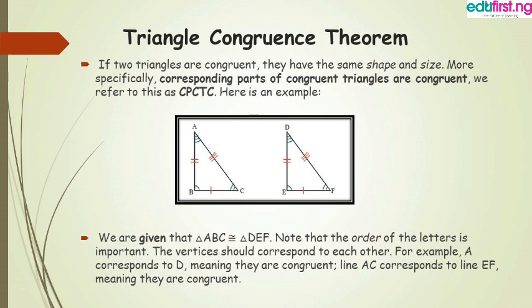B and E are equal, and C and F are also equal. Line AB is equal to line DE, and line BC is equal to line EF. Line DF is equal to line AC, as you can see. Line BC is marked with a single short line, and line EF is also marked with a single short line. Line AB has two lines, and line DE also has two lines. Line AC and line BF each have three lines. I hope you now understand.